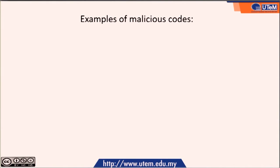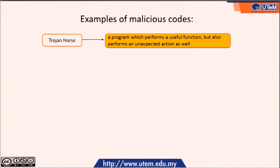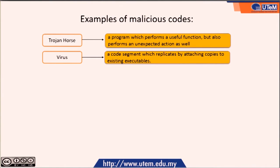Next, we look in detail at these different types of malicious codes. First is the Trojan Horse — a program which performs a useful function but at the same time also performs an unexpected action. Second is the virus, which is a code segment that replicates by attaching copies to existing executables. It is divided into two types: transient and resident.